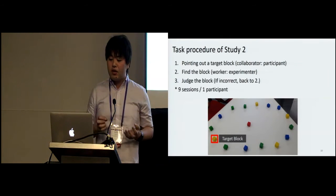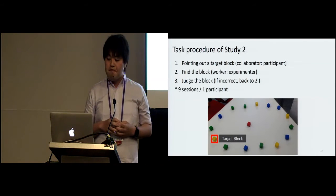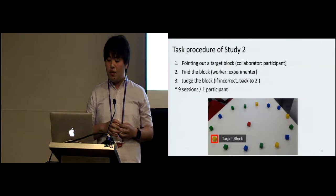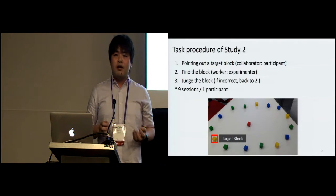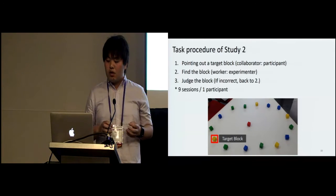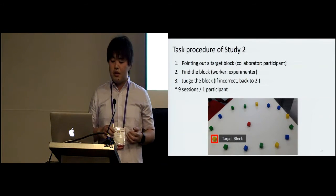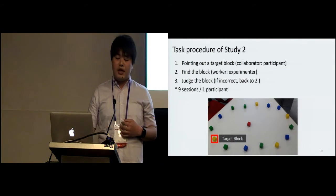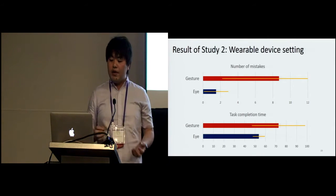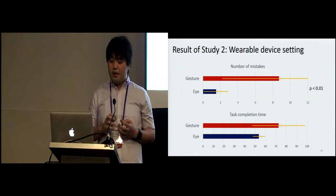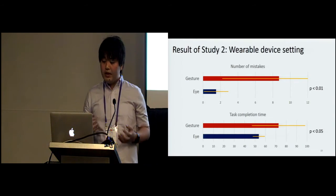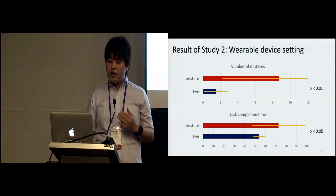The task procedure was as follows: before the task, we showed participants where the target block is located. The participants then pointed out the target block to the worker, who tried to find the target block from 15 blocks. When the worker found a block, the collaborator judged whether it was the target or not; if incorrect, the worker tried again from other blocks. Each participant took nine sessions of the task. Results showed that eye fixations could reduce the number of mistakes in nine sessions, and also mildly produced faster results than the gesture condition, demonstrating accurate and fast pointability of eye fixation in the wearable device setting.